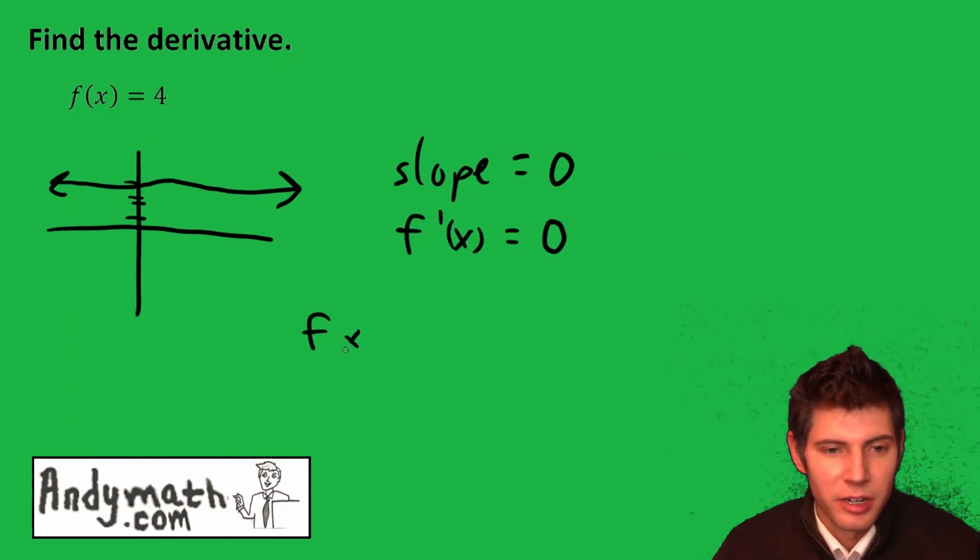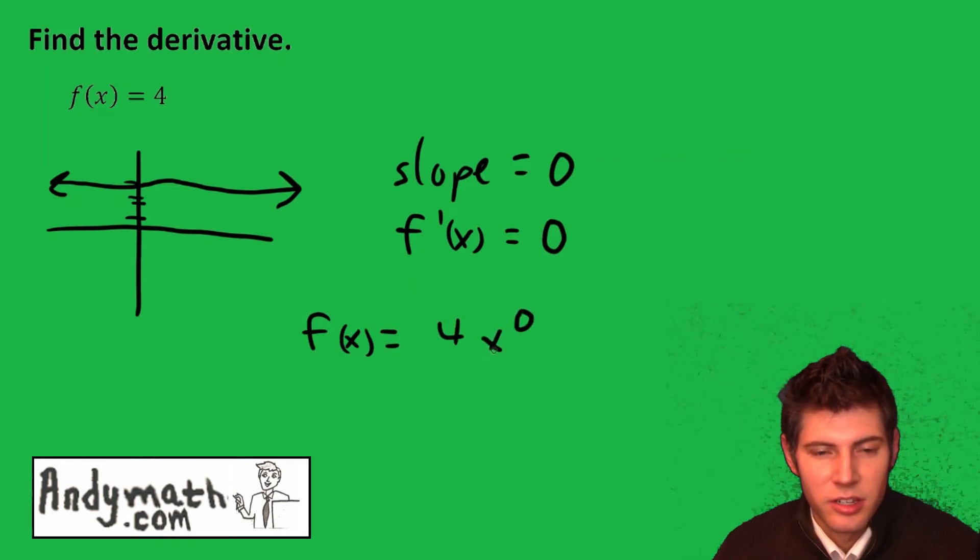That's one way we can do it. The other thing is to recognize that f of x equals 4 is basically x to the 0.